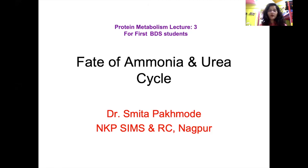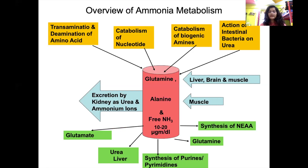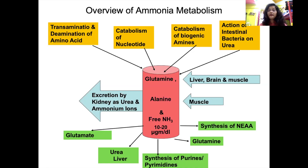This is the third lecture on fate of ammonia and urea cycle. Before going to the individual phases, let's have an overview of ammonia metabolism. Ammonia is released as a result of transamination and deamination reactions of amino acids, from catabolism of nucleotides, catabolism of biogenic amines, and action of intestinal bacteria on urea, which splits urea back into ammonia in the intestine.